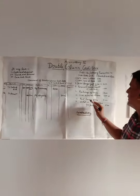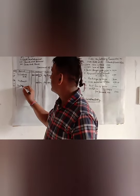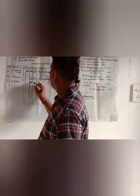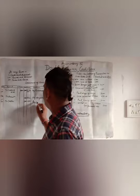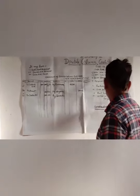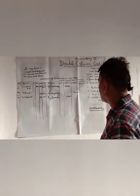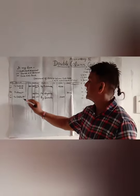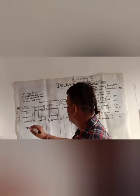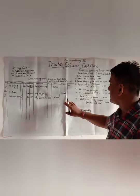A contra-entry is a transaction which affects both sides, and we put 'C' in the LF column on both sides. On 10th January, cash deposited into bank: we write '10th January, to bank account' and the amount 5,000 is written in the bank column. Then '10th January, by bank account' and the amount 5,000 is written in the cash column. Since this is written on both sides, we write 'C' in the LF column — this is a contra-entry.